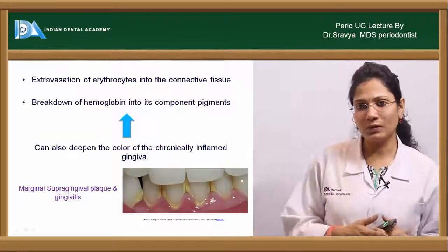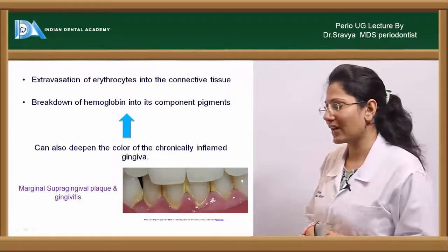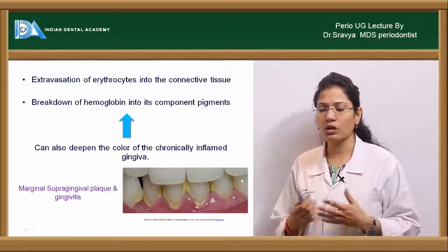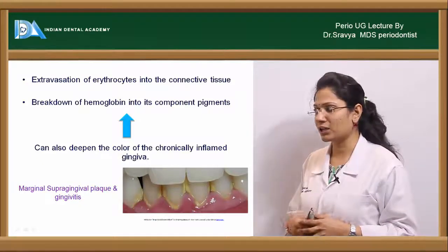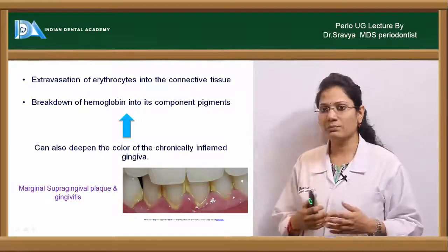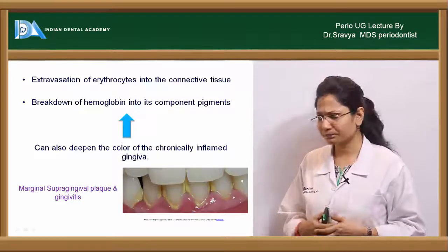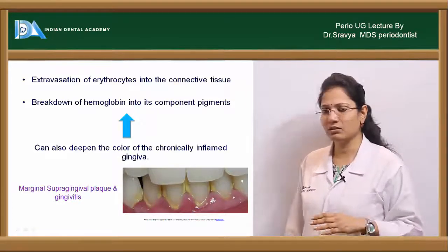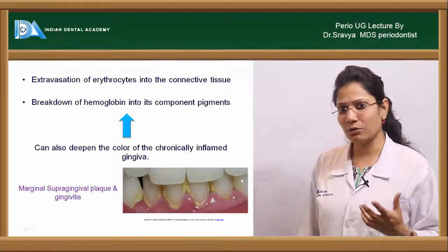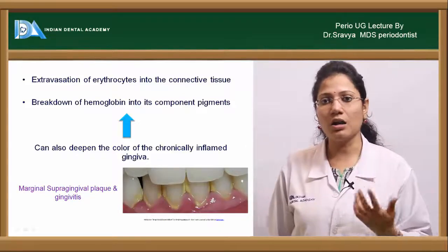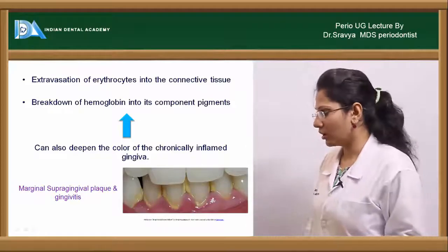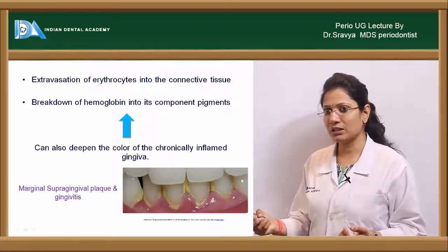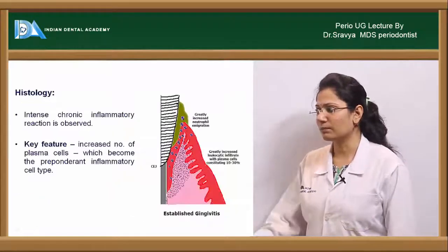This anoxemia superimposes with a bluish hue over the reddened gingiva. It then leads to extravasation of erythrocytes into the connective tissue, leading to further breakdown of connective tissue pigments and hemoglobin. Because of this breakdown of hemoglobin, the color appears deepened — which is seen in a chronically inflamed gingiva.